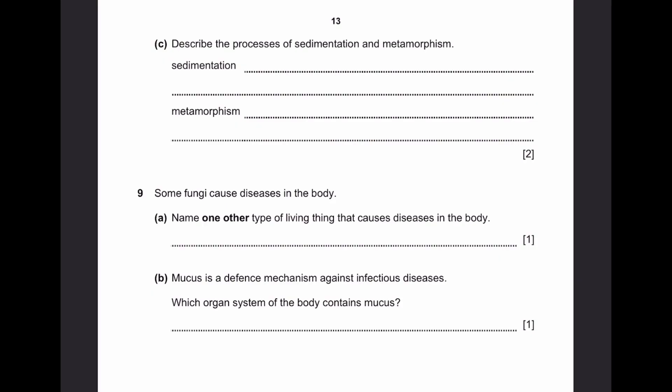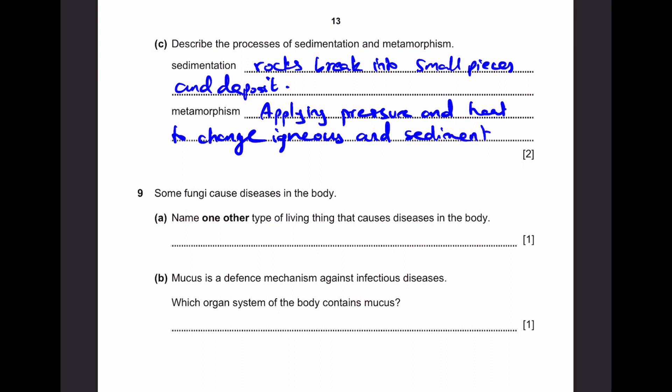Let's go to part C. Describe the processes of sedimentation and metamorphism. So sedimentation is the process by which rocks break into small pieces and deposit. These rocks are usually igneous and sometimes metamorphic rocks. They break into small pieces and deposit on the ground. As for metamorphism, simply apply pressure and heat to change igneous and sedimentary rocks into metamorphic rocks.